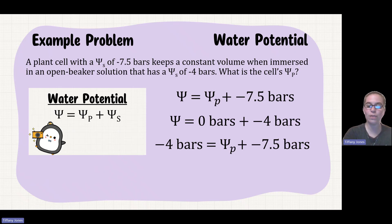So if we move that negative 7.5 to the other side, the way that we do that is we add 7.5 to both sides. And that's going to give me positive 3.5 bars equal to my pressure potential.